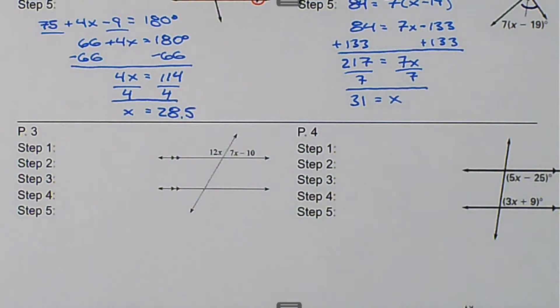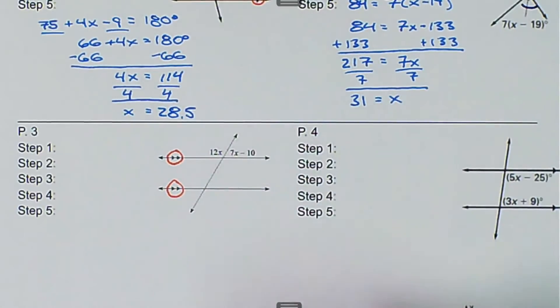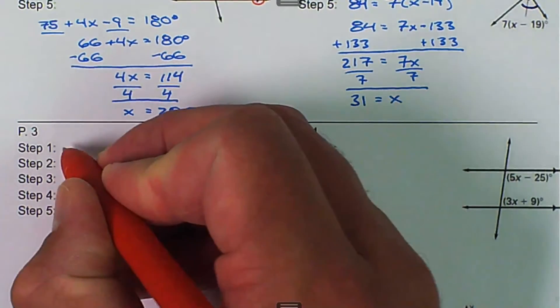In this case, we're trying to find out what x is. So the first thing, we want to go through the steps, and the first part is we want to decide are they parallel. So here we have two arrows on each of these, so we can say that these two lines are parallel, yes.